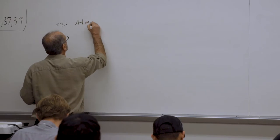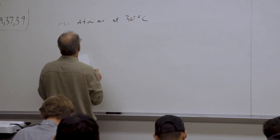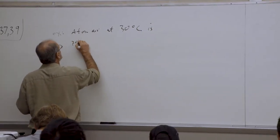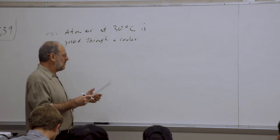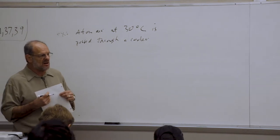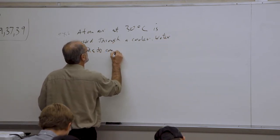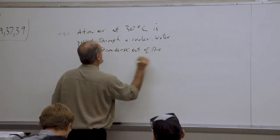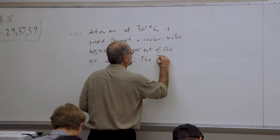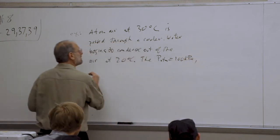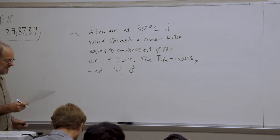Let's say we have atmospheric air at 30 degrees Celsius, and this atmospheric air is passed through a cooler — some sort of heat exchanger that allows us to cool the air. We observe that water begins to condense out of the air when the temperature reaches 20 degrees Celsius. If we note that the pressure in the atmosphere is 100 kilopascals, then we want to find the specific humidity as well as the relative humidity.